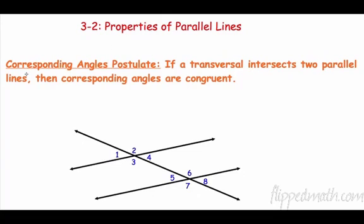All right, so the first one we talk about, corresponding angles. If a transversal intersects two parallel lines, then the corresponding angles are congruent. So that's pretty big, all right?